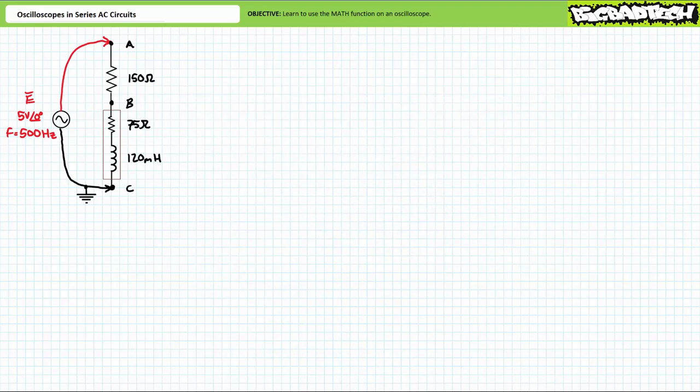As a warm-up exercise, let's put our series circuit analysis skills to the test. Consider the following series circuit consisting of a 5-volt sinusoidal AC source with an excitation frequency of 500 hertz, a 150 ohm resistor, and a 120 millihenry inductor that happens to have an internal resistance of 75 ohms. Note the function generator's lead at node C is the ground reference. This will be of critical importance when we discuss deploying the O-scope in this circuit. See if you can solve for the voltage drop across each element, the current through each element, and the source current.